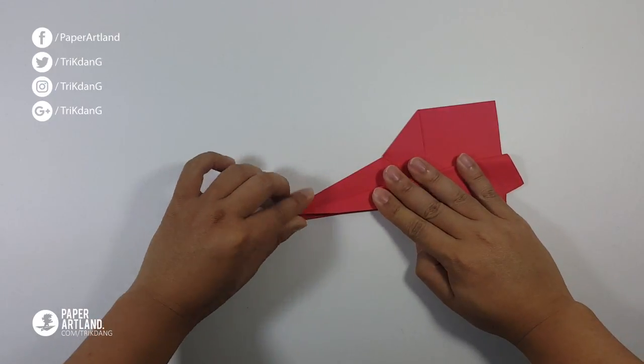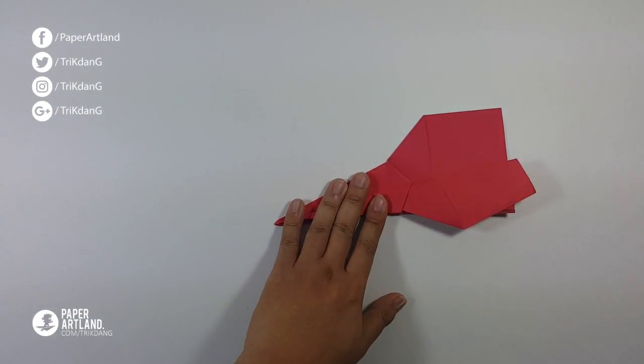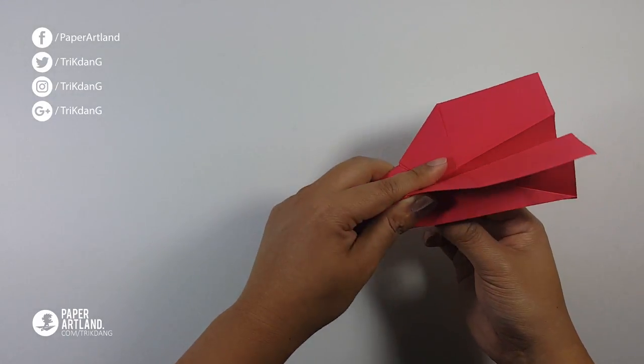On the following step, let's match this edge to the other edge. And then repeat the same fold for the other side. Looks nice, right? Next step, let's unfold the paper. Okay.